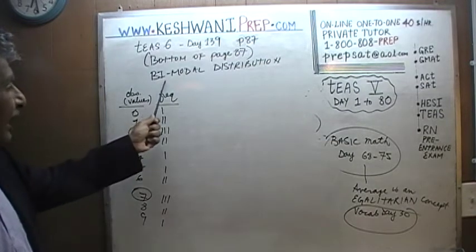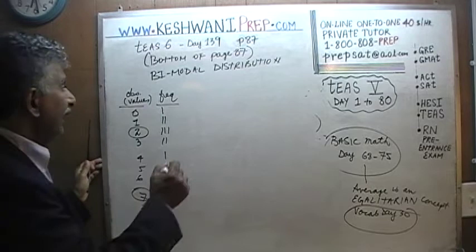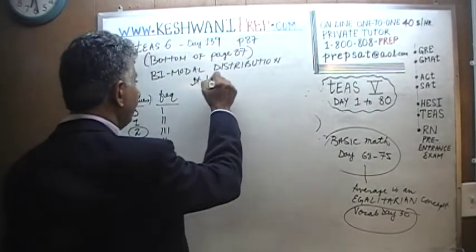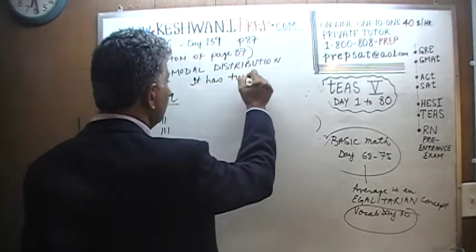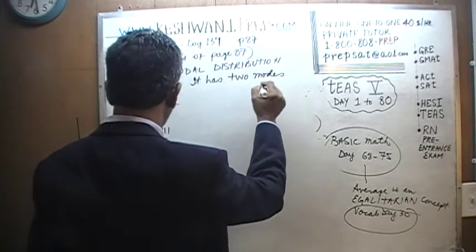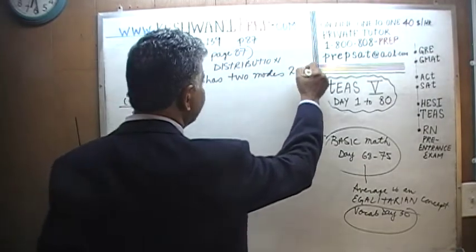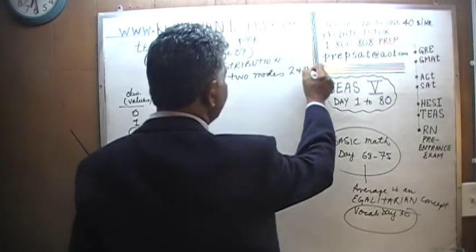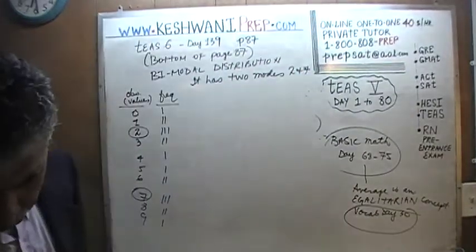This is what is known as a bimodal distribution. It has 2 modes — namely 2 and 7. That was the easy part.